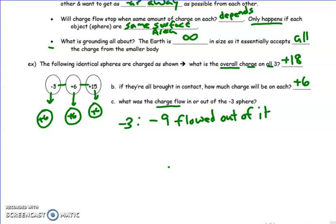So negative nine left this, leaving it positive six. Where did it go to? Well, it makes sense. It went to the positive fifteen, so if negative nine flowed into this, it became more negative, or less positive. So we could also say negative nine flowed in.